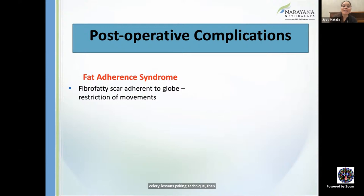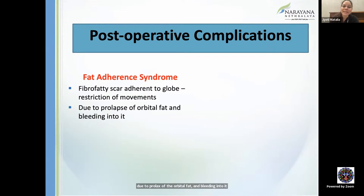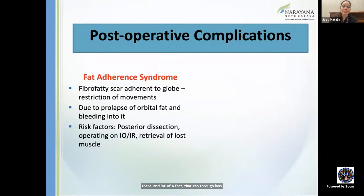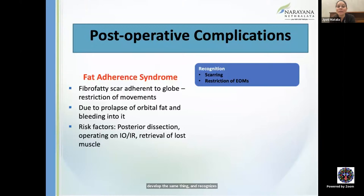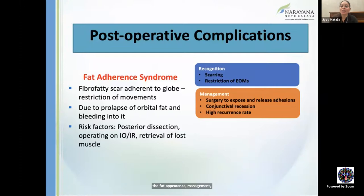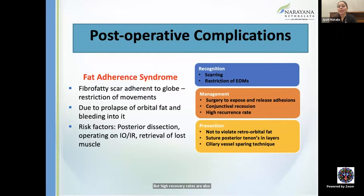Fat adherence syndrome: fibro-fatty scar adhering to the globe causing restriction of movement — due to prolapse of orbital fat and bleeding into it. Risk factors: posterior dissection, inferior oblique and inferior rectus surgery (most fat and posterior Tenon's), retrieval of lost muscle. Recognition: scarring and restriction on history and examination. Management: surgery to expose and release adhesions, conjunctival recession; high recurrence rates. Prevention: avoid violating retro-orbital fat; suture posterior Tenon's in layers; use ciliary vessel sparing technique.